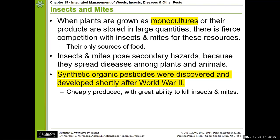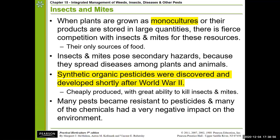These pesticides are cheaply produced and have a great ability to kill a wide variety of insects and mites — we're talking about insecticides and miticides. However, over time, a lot of these pesticides, especially if they are persistent, will allow pests to build up resistance, making their use less effective, while their negative impacts on the environment can pose a much more significant problem.